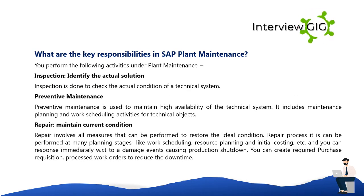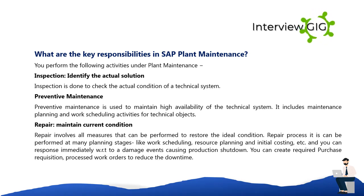The key responsibilities in SAP Plant Maintenance include the following activities: Inspection — done to check the actual condition of a technical system and identify the actual solution. Preventive Maintenance — used to maintain high availability of the technical system; it includes maintenance planning and work scheduling activities for technical objects.